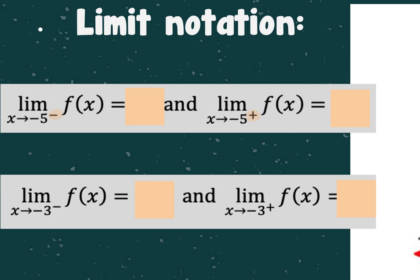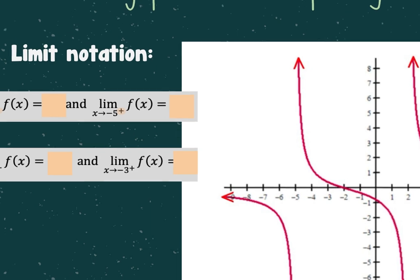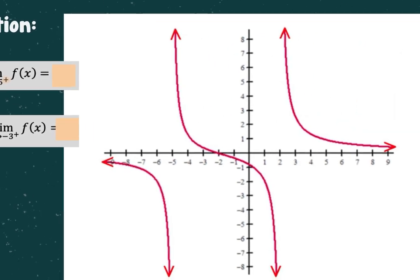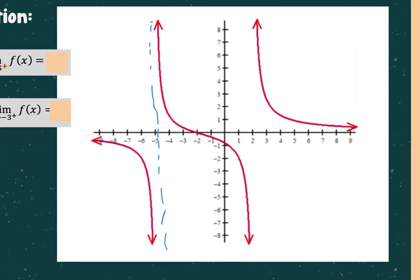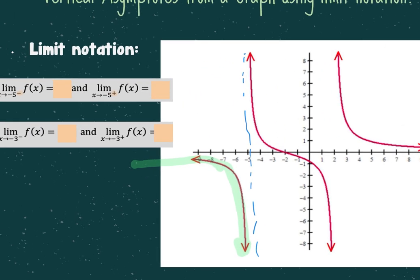Now we're coming towards the asymptote from both sides. If it's saying from the left, we're literally coming in from the left. So as I come in from the left and get closer to negative five, what's happening to my y values? They're going to keep going down without bound, which means that limit is negative infinity. From the positive side — coming in to negative five from the right — the y values are increasing without bound, which means positive infinity.